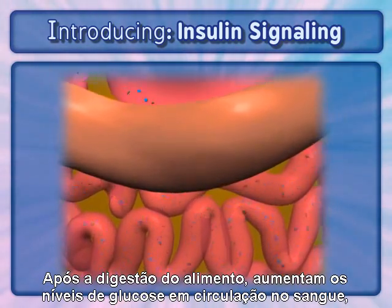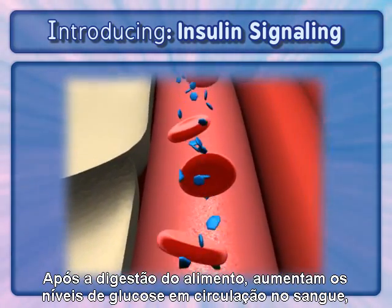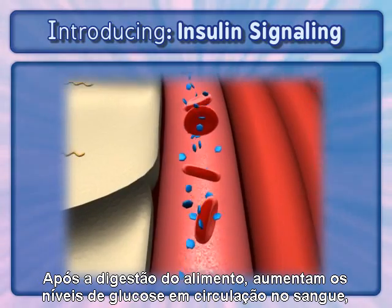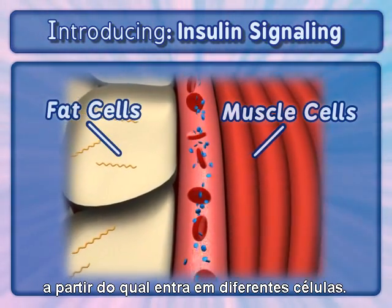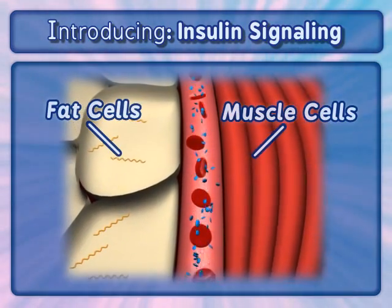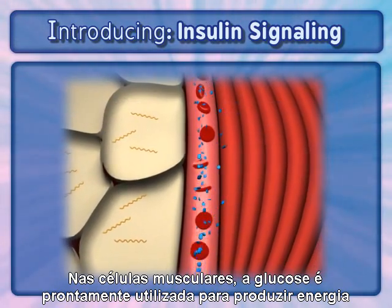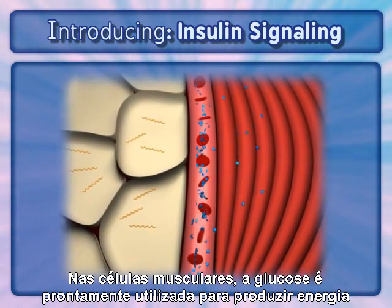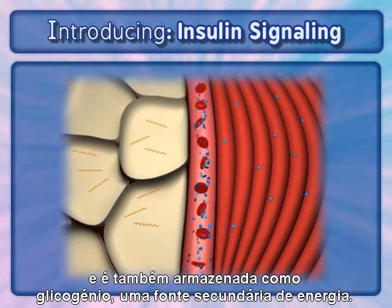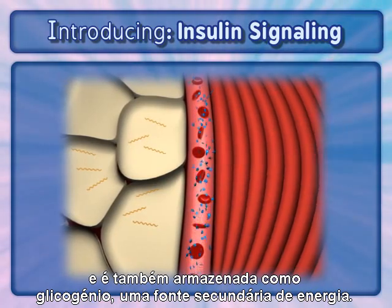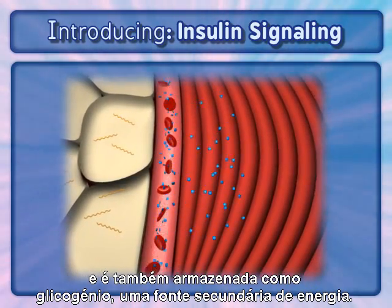Following the digestion of food, higher levels of glucose circulate through the bloodstream where it enters different cell types. In muscle cells, glucose is readily used to produce energy and is also stored as glycogen, a secondary short-term energy source.